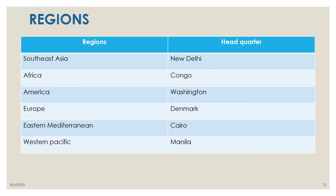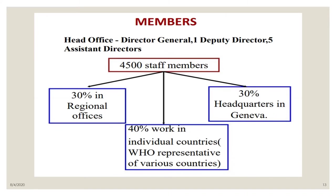The regional headquarters are: Southeast Asia in New Delhi, Africa in Congo, Americas in Washington, Europe in Denmark, Eastern Mediterranean in Cairo, and Western Pacific in Manila, Philippines. At the Head Office, there is a Director General, one Deputy Director, and five Assistant Directors. There are 4,500 staff members — 30% in regional offices, 30% at headquarters in Geneva, and 40% working in individual countries.